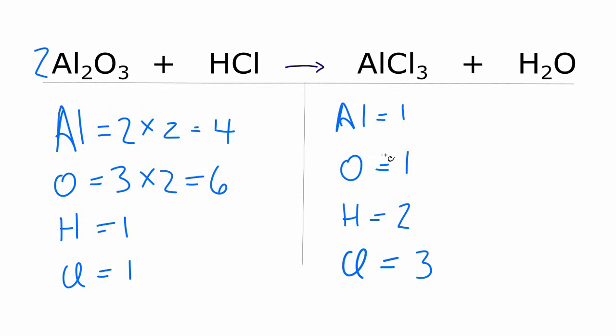So when I come over here on the product side, I'll put a 6 in front of the H2O, and 1 times 6, that equals 6. So my oxygens are balanced, and then 2 times 6 for the hydrogens, that gives me 12.